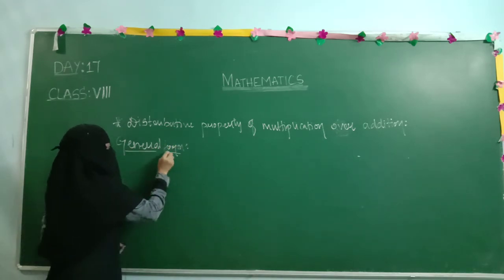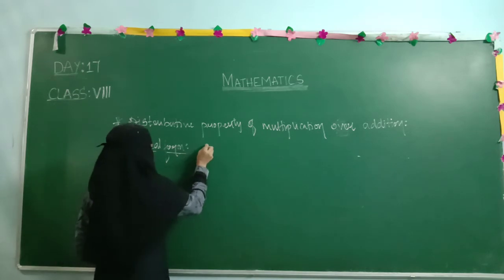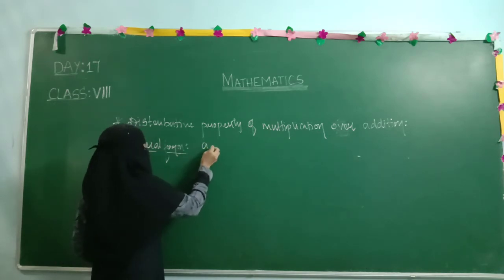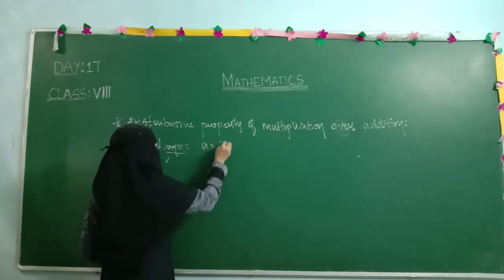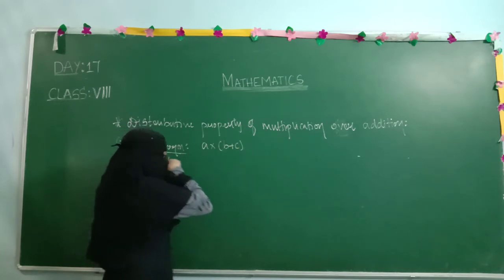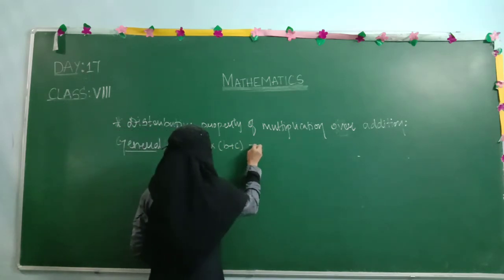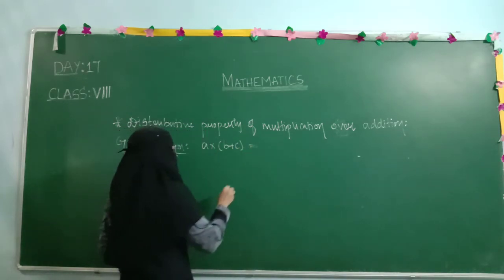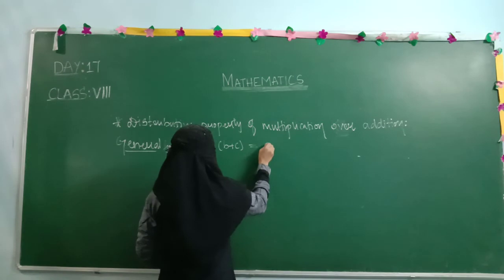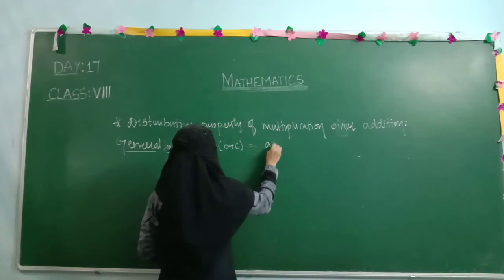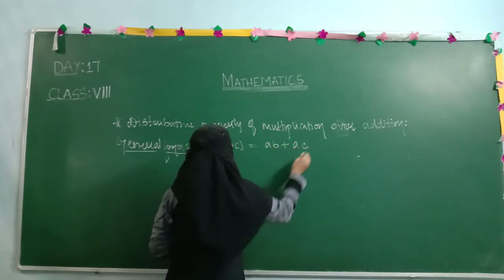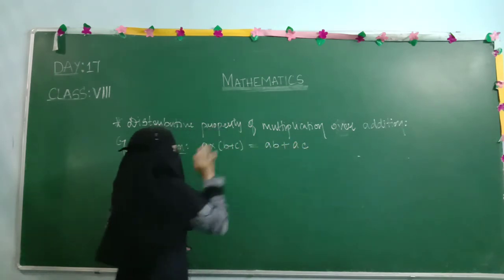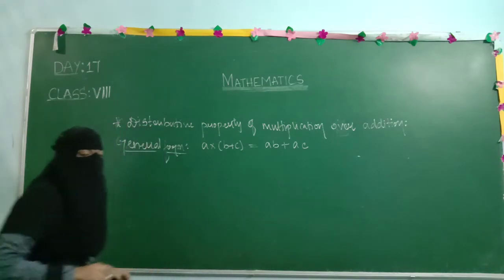The general form is: A into (B plus C) equals AB plus AC. I will explain how we get this.